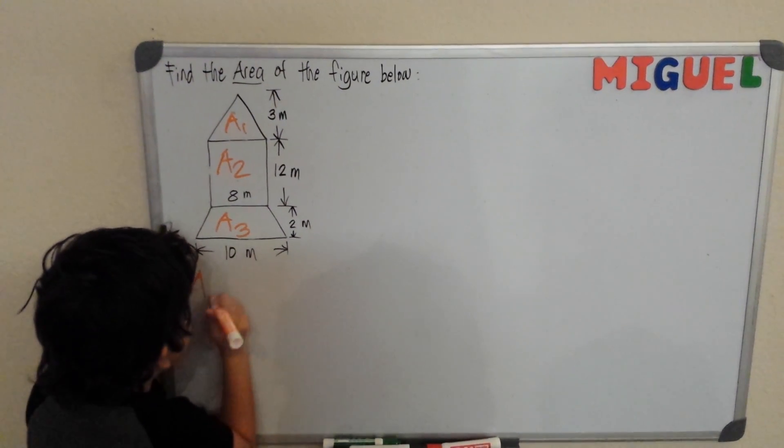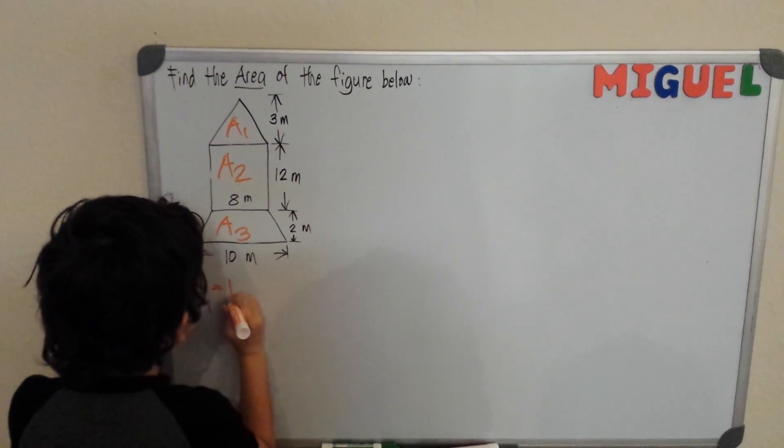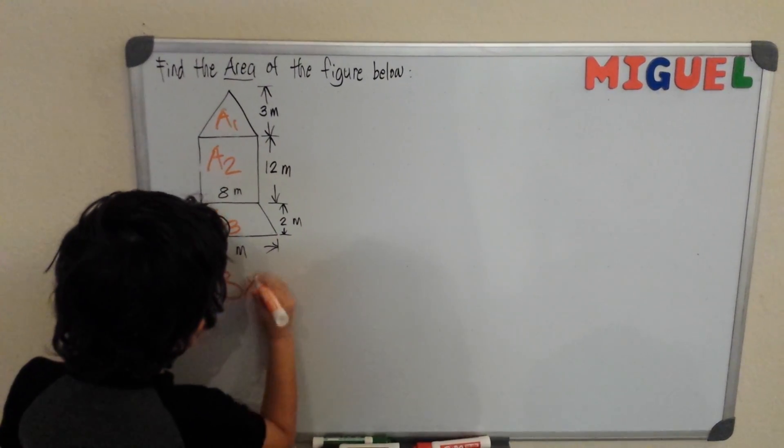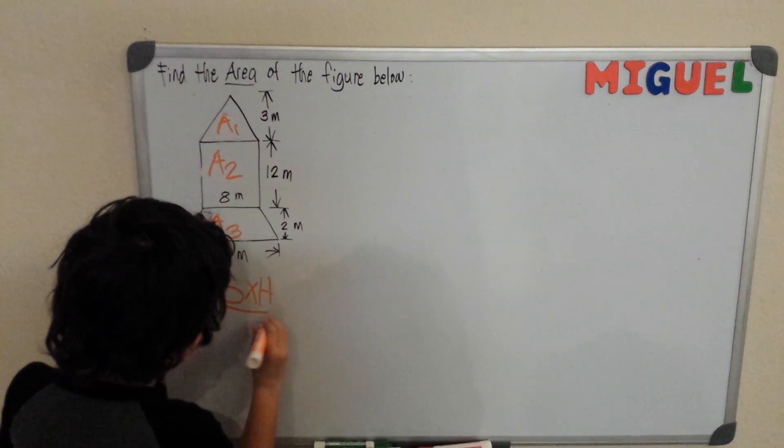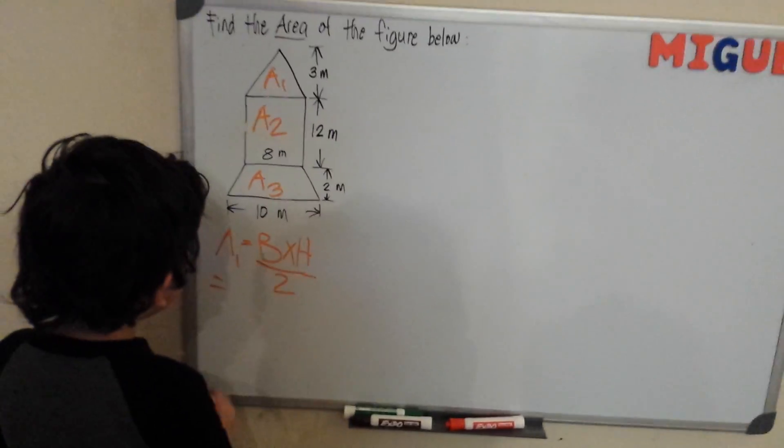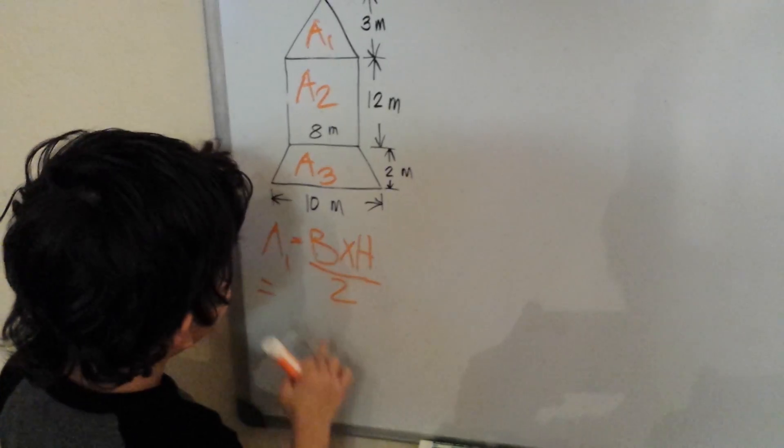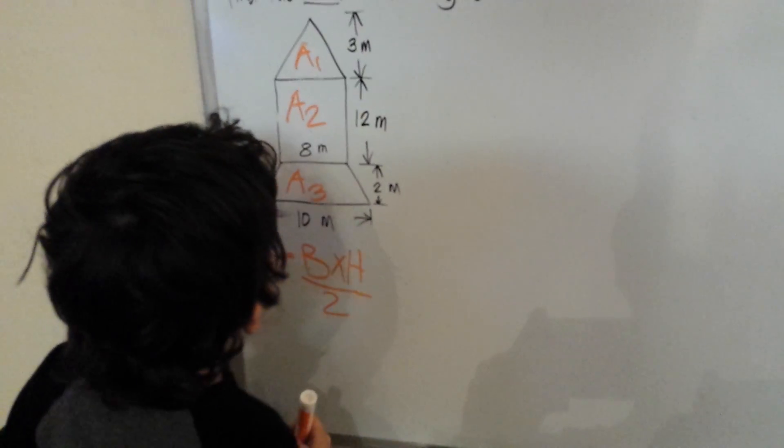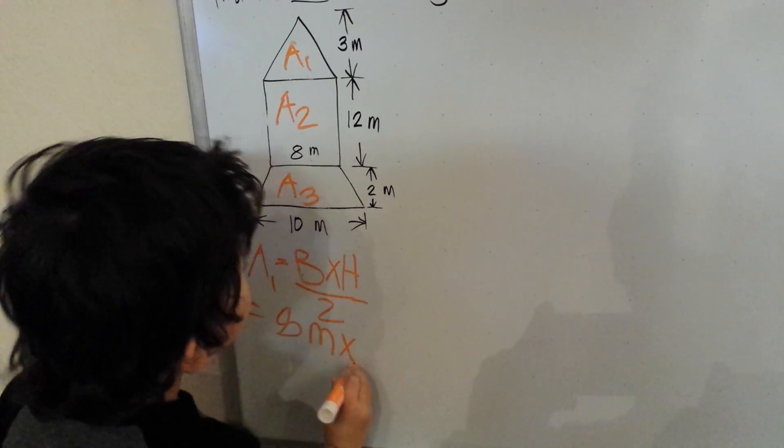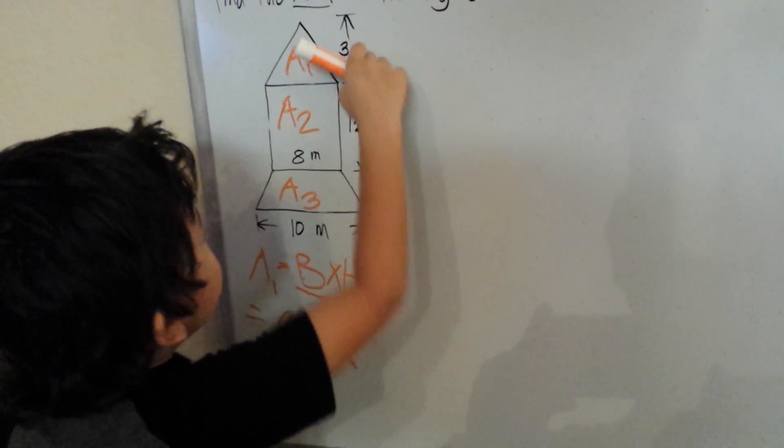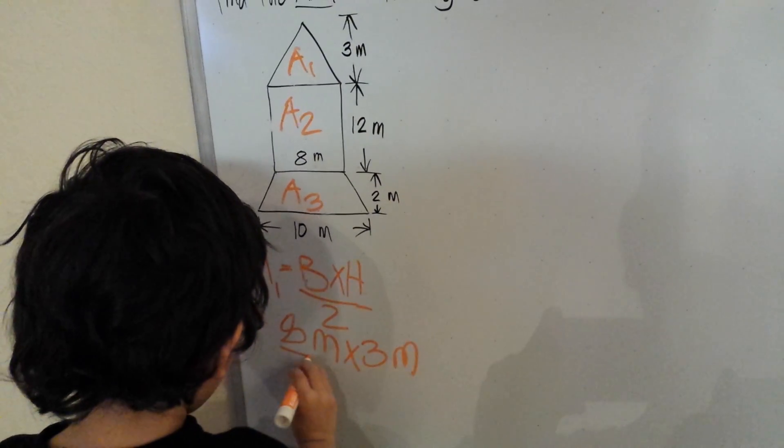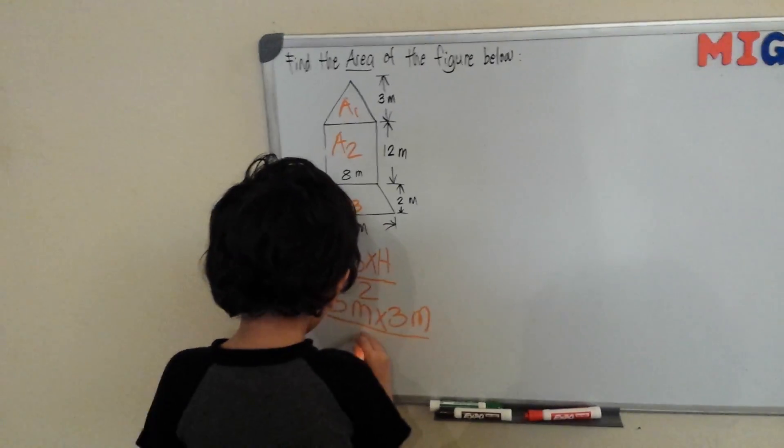So our area 1 is equal to base times height divided by 2. I'm going to get my base, and my base is 8 meters times 3 meters.